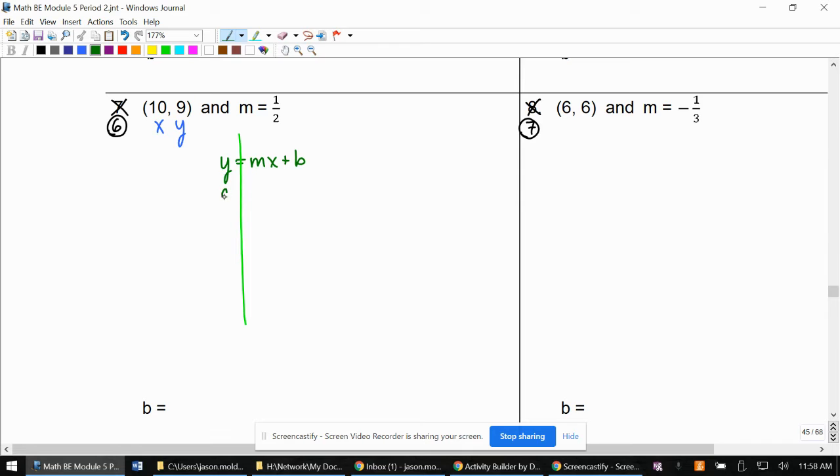9 is the Y value, so that goes first. One half is the M. 10 is the X plus B. We have 9 equals 1 half times 10 is 5 plus B.